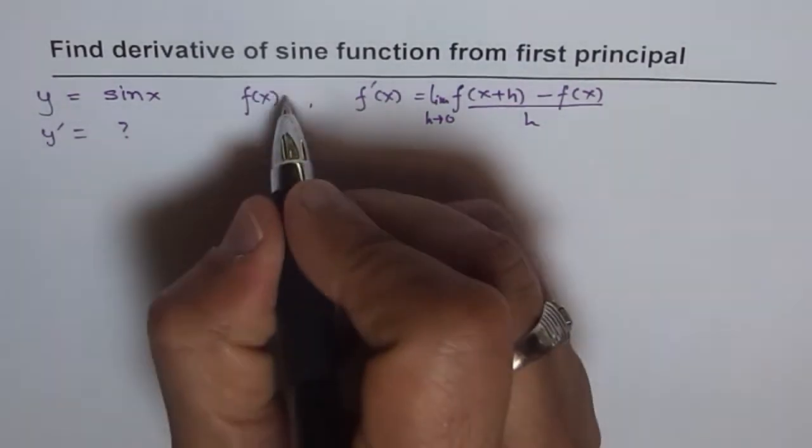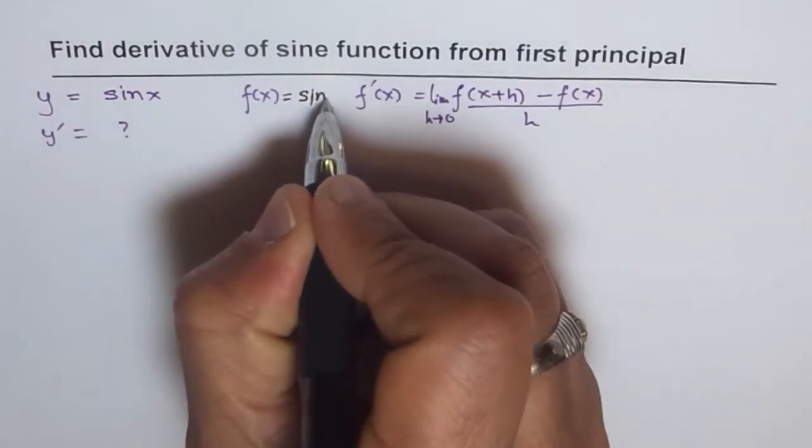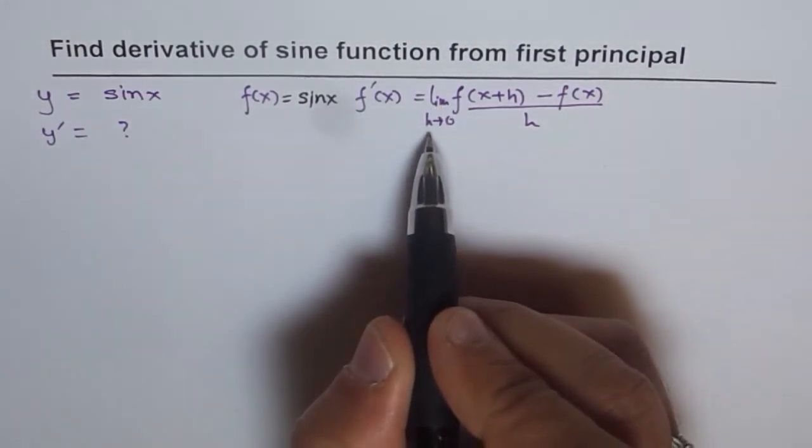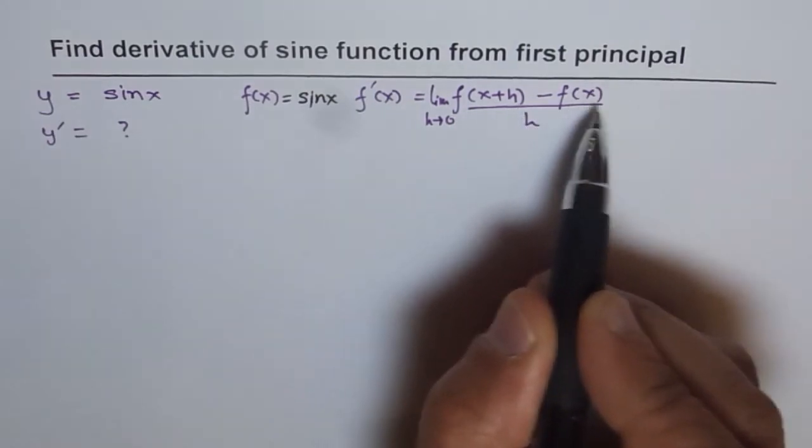So let us say that f of x for us is actually sine x. Now, f dash of x should be limit h approaches 0 for f of x plus h minus f of x over h.